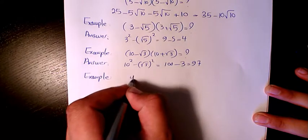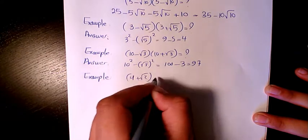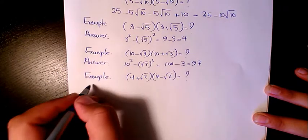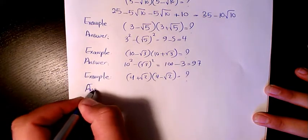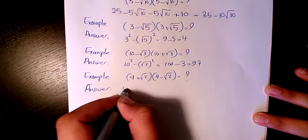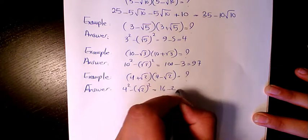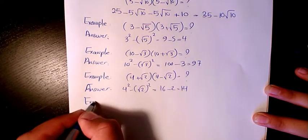Next example is (4 + √2) times (4 - √2). Answer is 4² minus √2², so it's going to be 16 minus 2, which is 14.